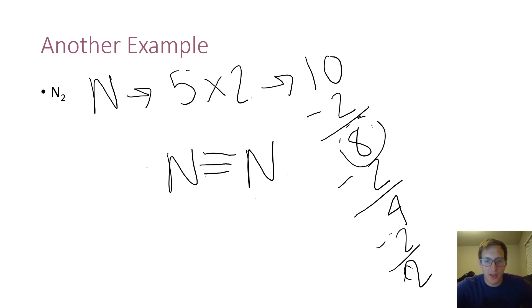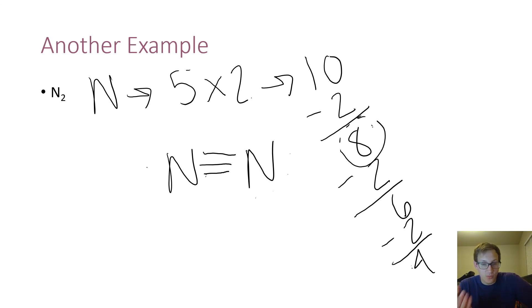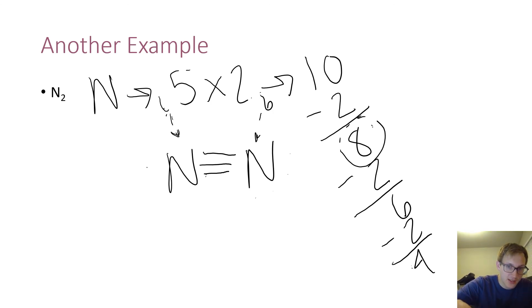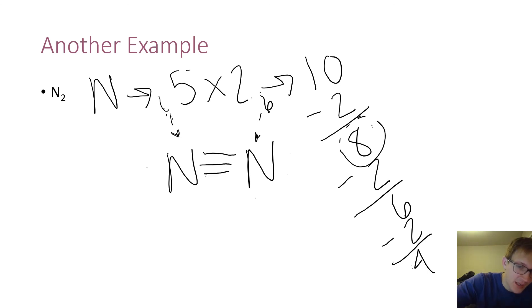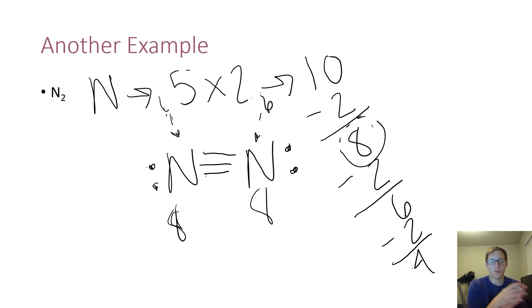I made a math mistake earlier — eight minus two is actually six, not four. So I actually have four valence electrons remaining after the double bond. With a triple bond, each nitrogen has six valence electrons from the bond. I have four more to place. If I place two on the left side and two on the right side, now each of them has exactly eight, just like I want. If you can't get it to work out by just placing all your valence electrons, you need to start looking into double bonds and triple bonds. Always start with single bonds and then move on from there.